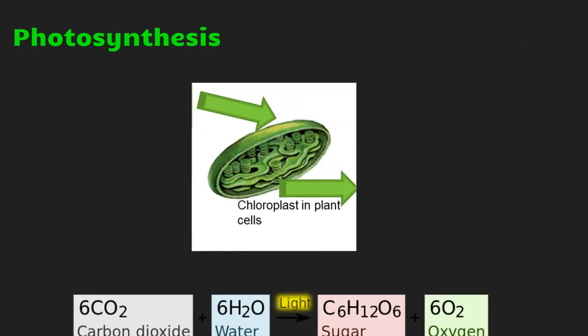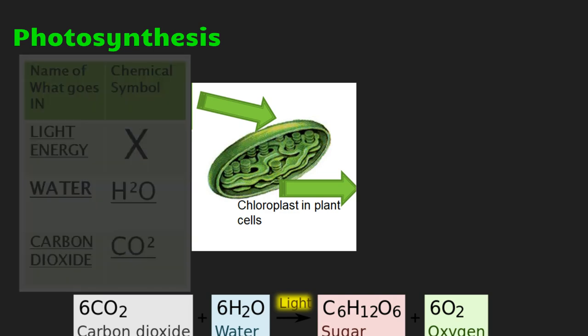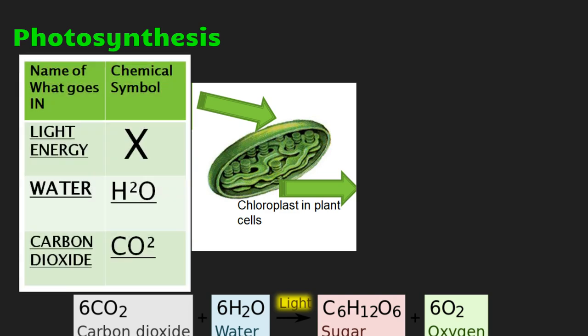So let's dive deeper into photosynthesis. This is a picture of a chloroplast. In the center are these curlicue things called thylakoids. They perform a chemical reaction where they take certain molecules, break them apart, and then make them into new molecules, just like we learned about in chemistry first semester. What goes into the chloroplast is light energy, water, and carbon dioxide.